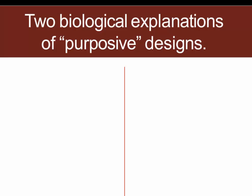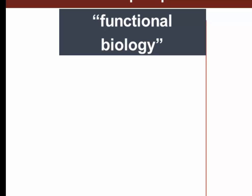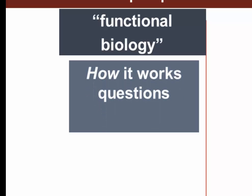Mayr's point was that biology can explain those purposes and designs in two ways. There are two biological explanations that help us make sense, from a scientific perspective, of the appearance of design and purpose in living things. The first is the product of what Mayr called functional biology — the kind of biology most of us learn in high school and the first year of college — and this kind deals with 'how it works' questions.